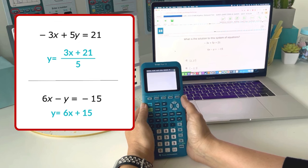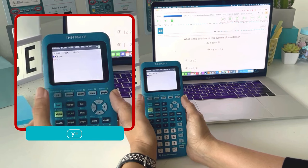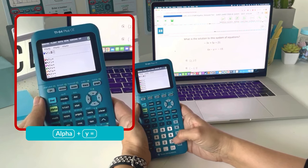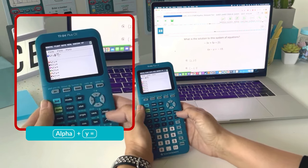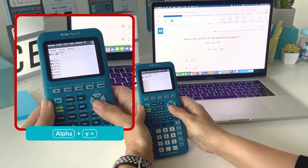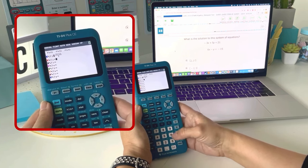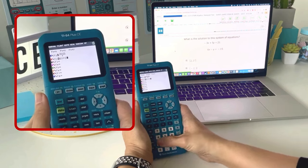So once I've rewritten those equations, I can type them in the calculator by going to y equals. I'm going to choose alpha y equals to get my numerator over denominator and choose 3x plus 21 over 5. Enter. And my second equation is 6x plus 15.